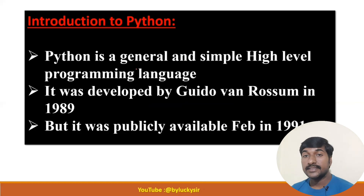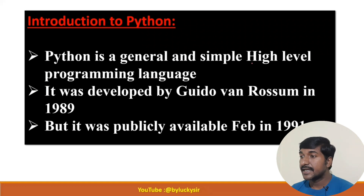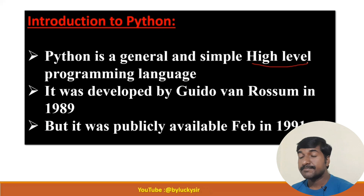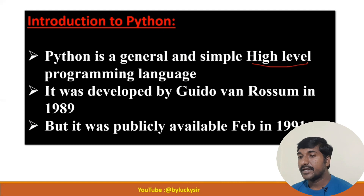So Python is a general purpose, simple, high-level programming language. High-level means it uses English-like language — when writing Python, you may feel like you are writing English statements only, compared to other programming languages. General purpose means by using Python we can develop any type of application.